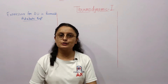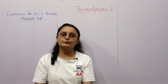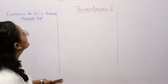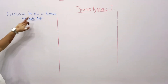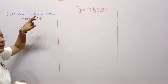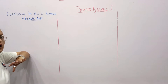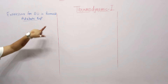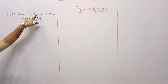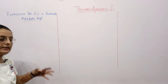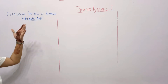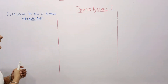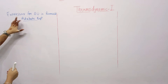Hello everyone, I am PK Chaudhary. Welcome to our YouTube channel Creative Study AK. Today we are going to derive expressions for delta U (internal energy), delta H (enthalpy), and W (work done) for irreversible adiabatic expansion.